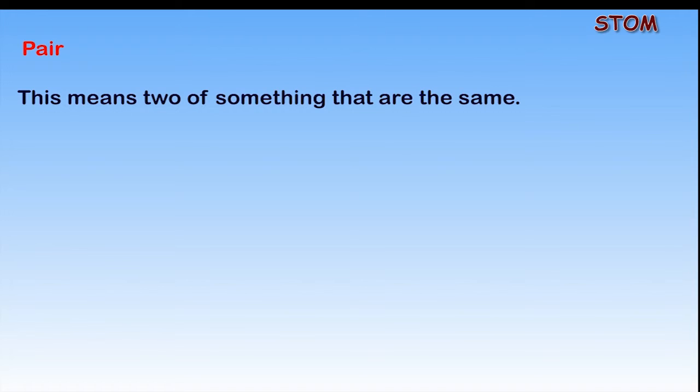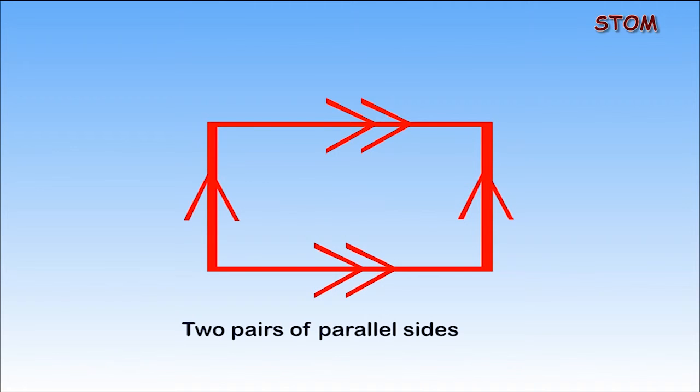Pair. A pair means two types of a thing that are the same. Looking at the rectangular shape on the screen, we have two pairs of parallel lines that are the same. The next example will show a pair of parallel lines.